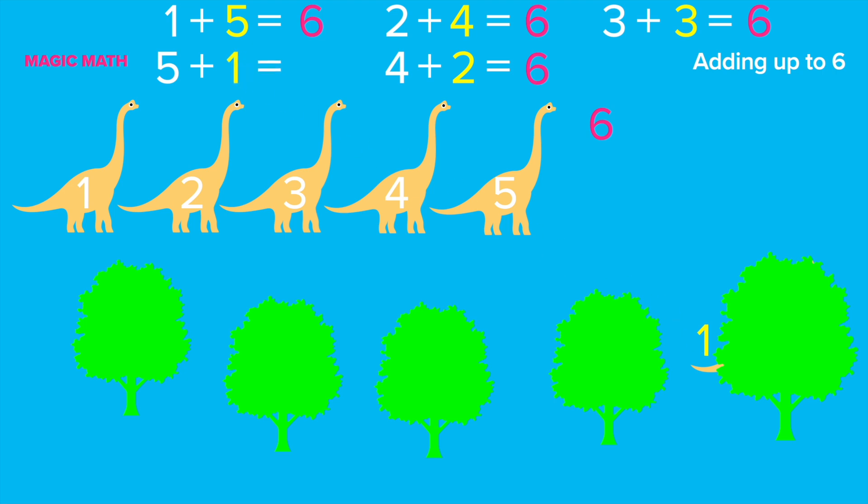Impressive! Now we learn 5 different ways of adding up to 6. And it seems that the order of the numbers in addition doesn't matter. 1 plus 5 and 5 plus 1 both equal to 6. 2 plus 4 and 4 plus 2 both equal to 6.